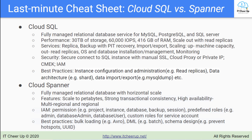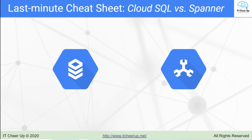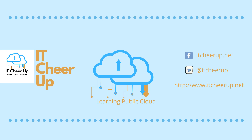Now we've finished the last-minute cheat sheet of Cloud SQL and Cloud Spanner, two fully managed relational database services in Google Cloud. In the next video, I will go through the relational database services decision tree and how to use the decision tree to answer relational database questions from the PDE sample questions. Thanks for watching and as always, subscribe to my channel for more great cloud computing learning tips.